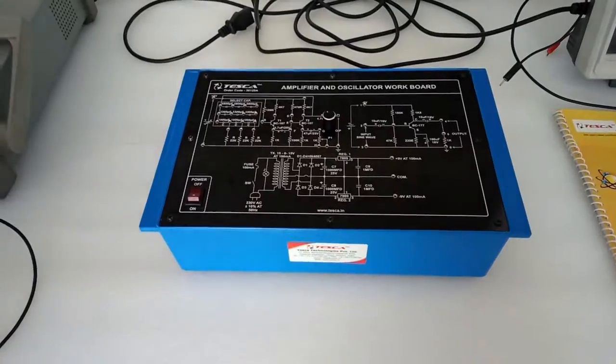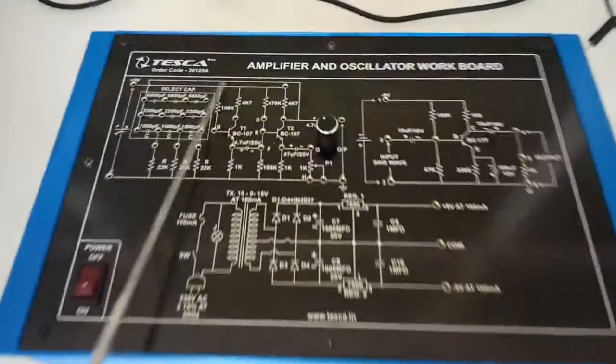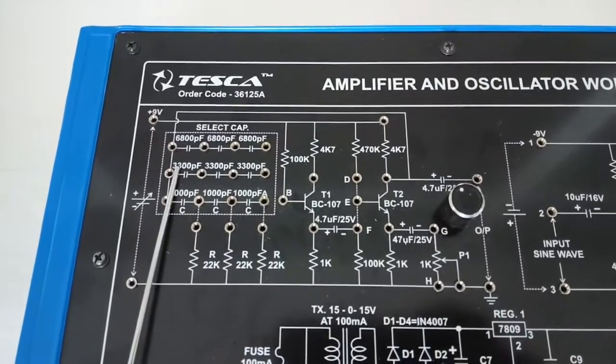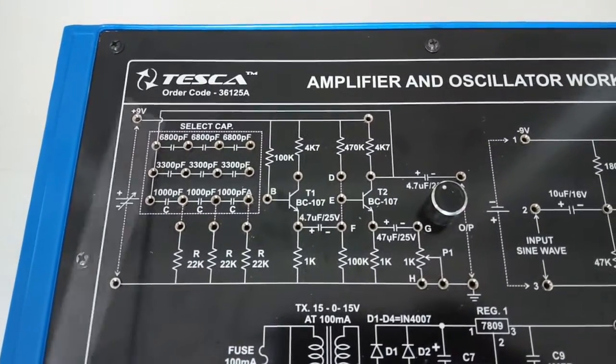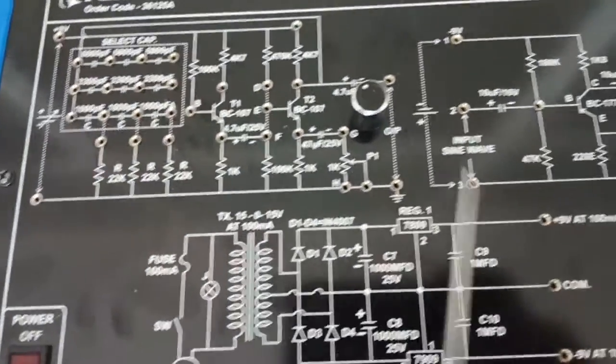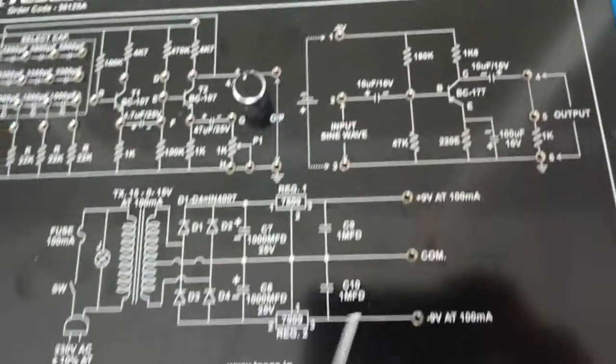These are different types of capacitors: 1000 picofarad, 3300 picofarad, and 6800 picofarad. This is the phase shift oscillator circuit, this is the CE amplifier circuit, and this is the power supply circuit.